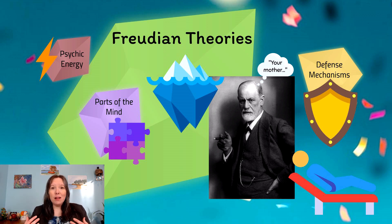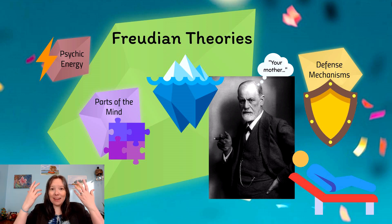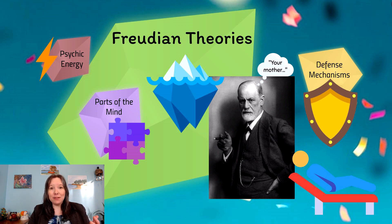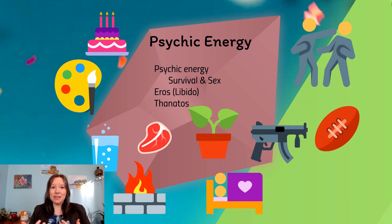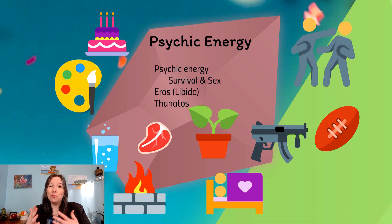According to Freud, we all have a certain level of psychic energy — not fortune-telling, but psychological energy, the energy in our mind. He believed the amount we had was finite; we couldn't create or destroy it, but we had to use it up somehow. He believed our psychic energy was dominated by two major drives: Eros and Thanatos.